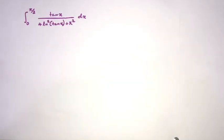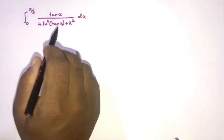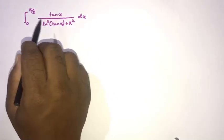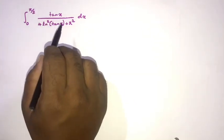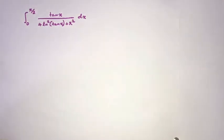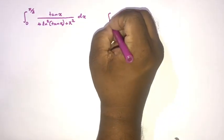Welcome to the Mathematics My Channel. In this video we are going to solve this interesting integral: the integral from 0 to π/2 of tan(x) over [4·ln²(tan x) + π²] dx. To begin, we'll use King's property.